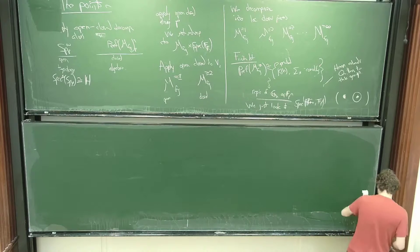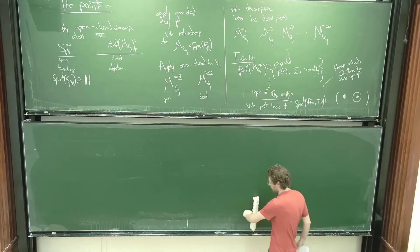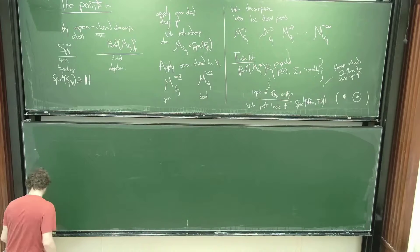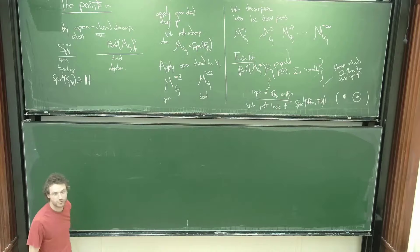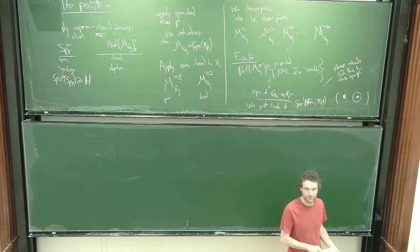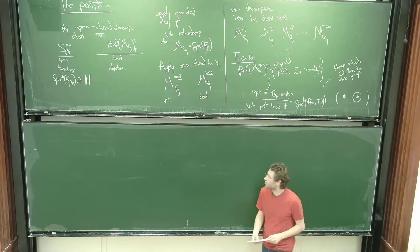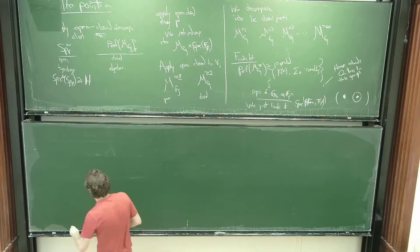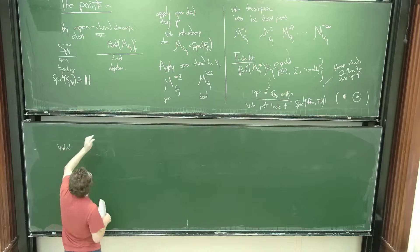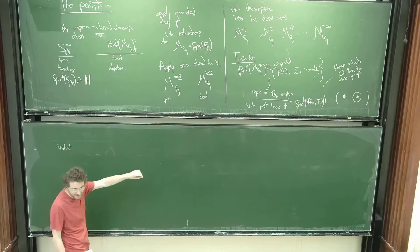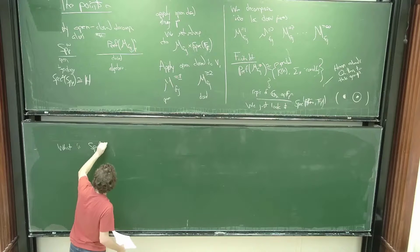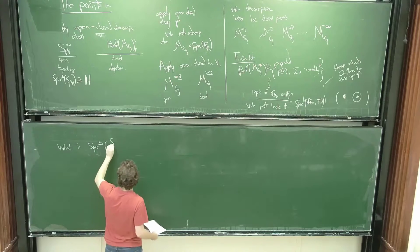At height infinity, what we see is a copy of automorphisms of the formal additive group — the only height-infinity formal group. That is the polynomial part of the dual Steenrod algebra. So the remaining problem, before we work out how to put all these pieces back together again, is: what is Spec of the dual Steenrod algebra comodules?